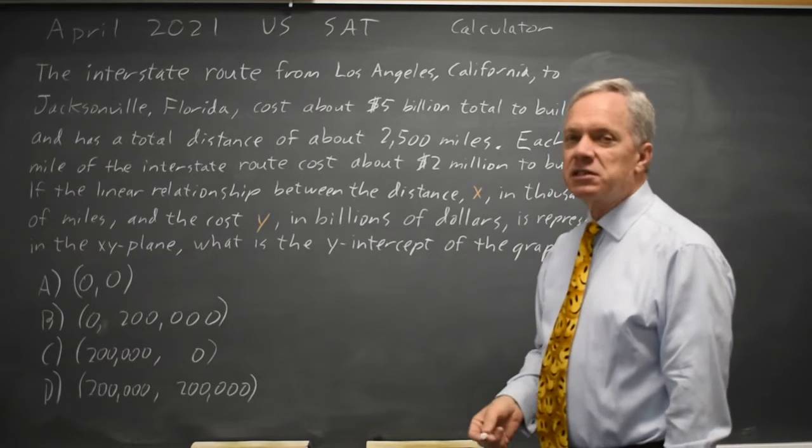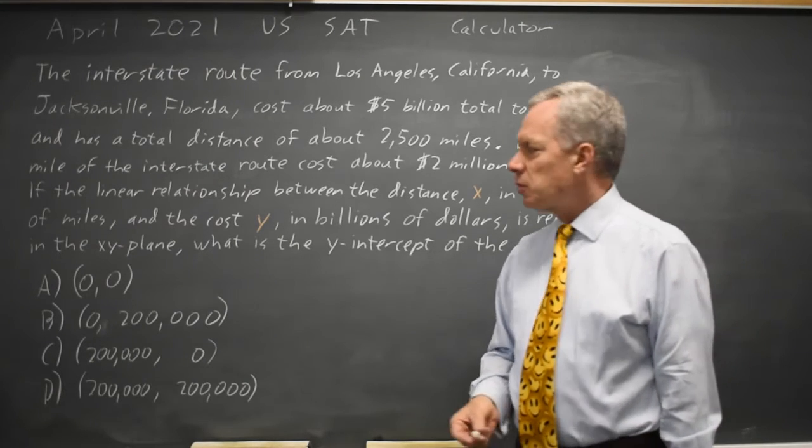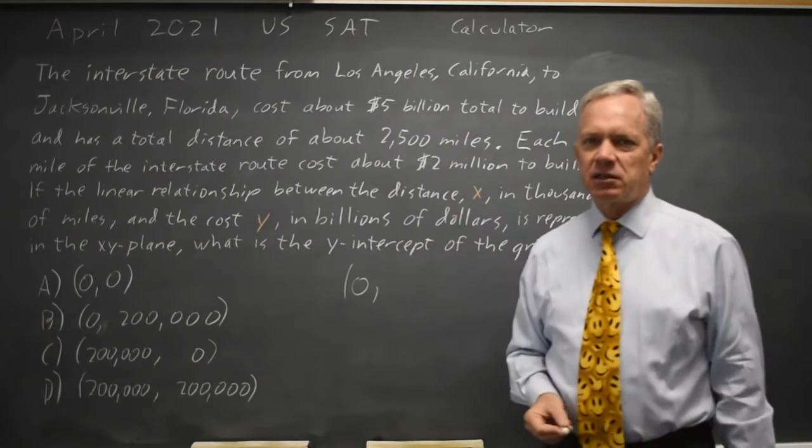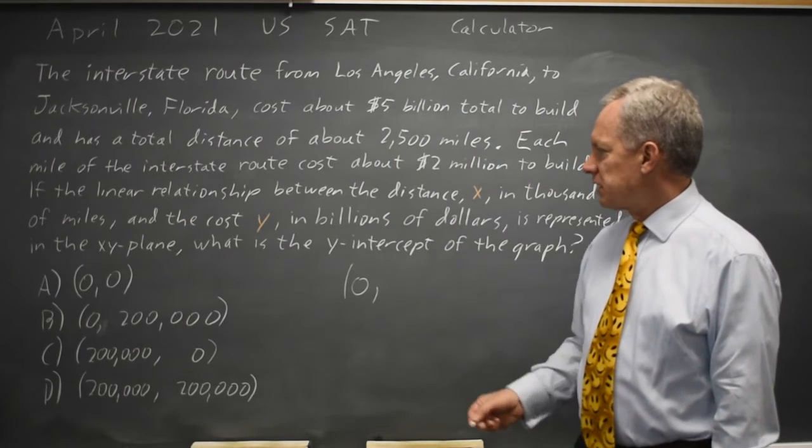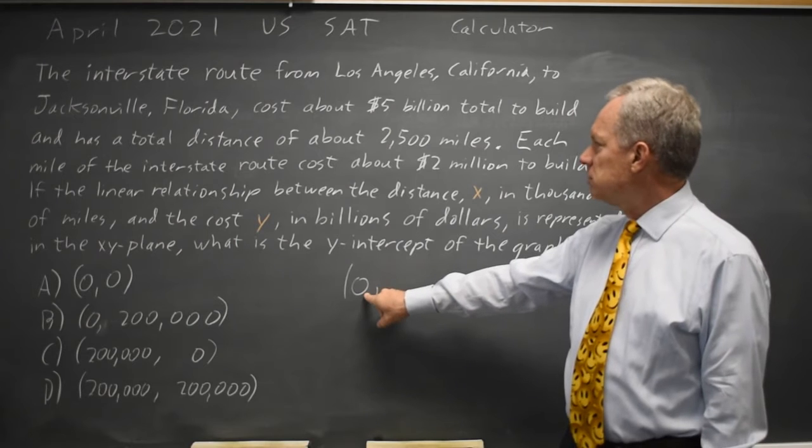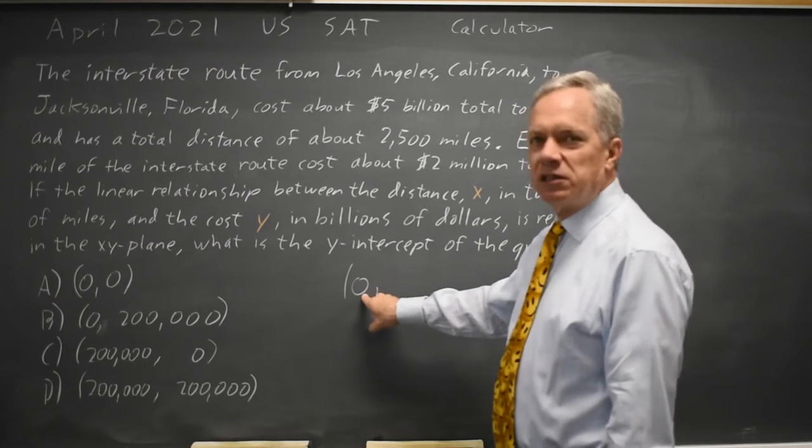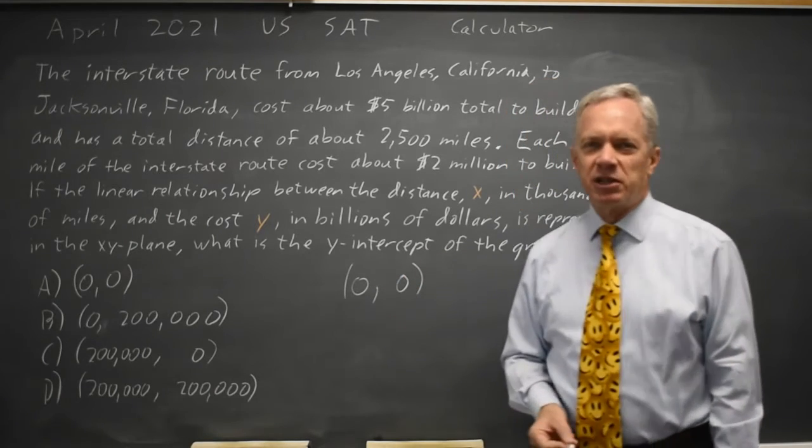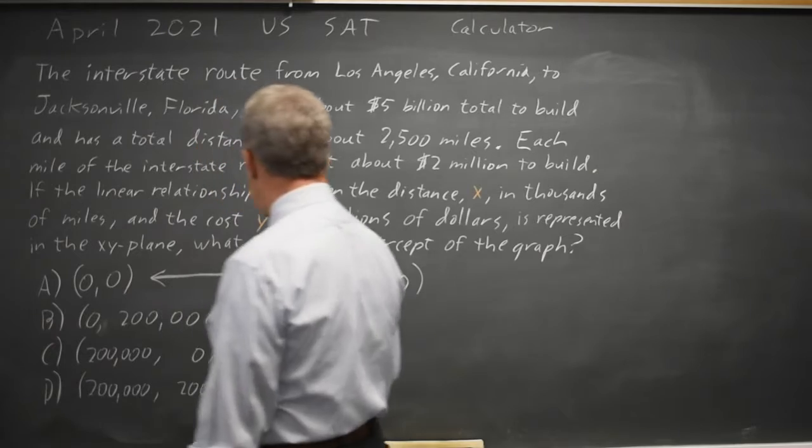The y-intercept is the point where the graph goes through the y-axis, so that's an x-value of zero on the y-axis, and the cost of building an interstate with length zero thousand miles is going to be zero. It doesn't cost anything to not build a road, so the y-intercept would be zero, zero.